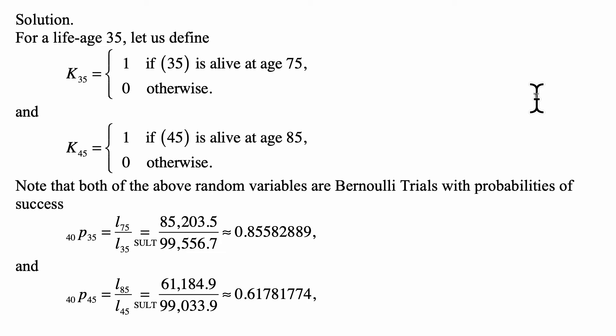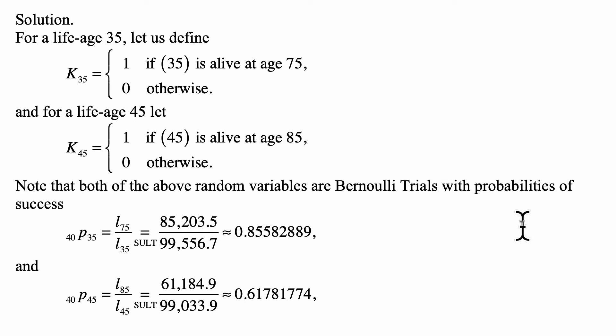For a life age 35, let K35 be 1 if the life age 35 is alive at age 75, and 0 otherwise. For a life age 45, let K45 be 1 if the life age 45 is alive at age 85, and 0 otherwise. Both random variables are Bernoulli with probabilities of success equal to 40P35, which equals L75 over L35 from the table — approximately 0.86 — and 40P45, which equals L85 over L45 — approximately 0.62.